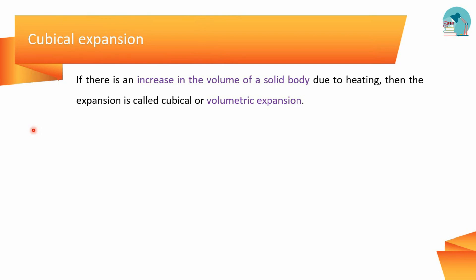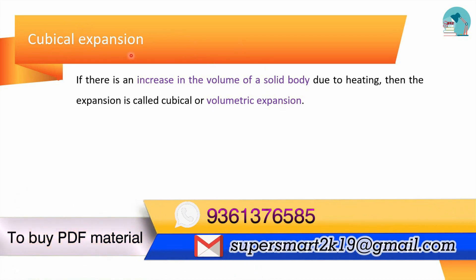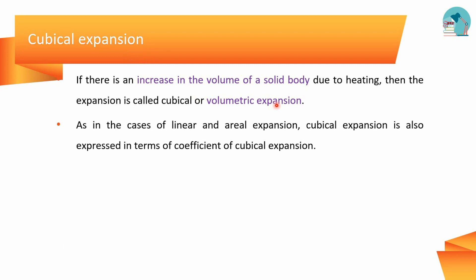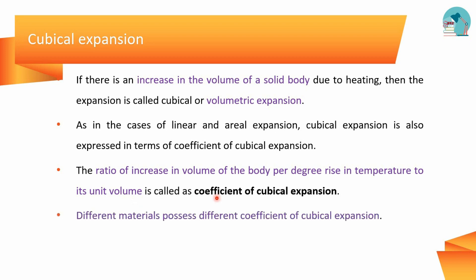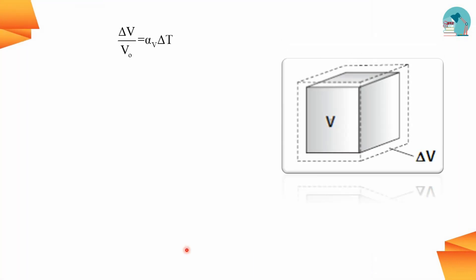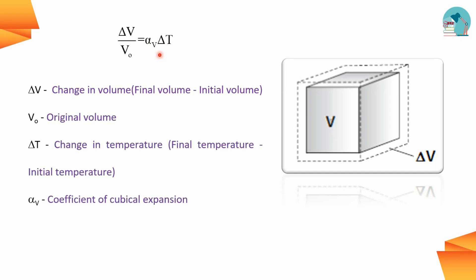Cubical expansion involves volume increase — also called volumetric expansion. The coefficient of cubical expansion is the ratio of rise of volume of the body per degree rise in temperature in its unit volume. Each material has one coefficient value. The SI unit is per Kelvin. Delta V is the increase in volume. V0 is the original volume. Alpha V is the coefficient. Delta T is the change in temperature.